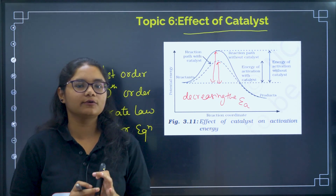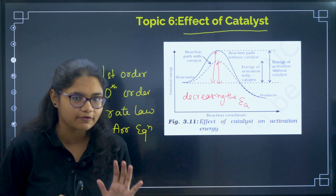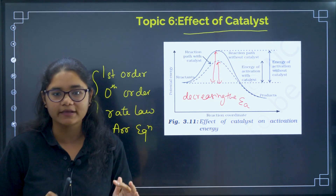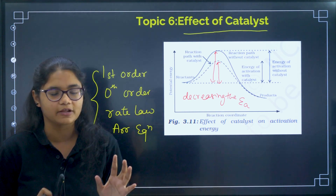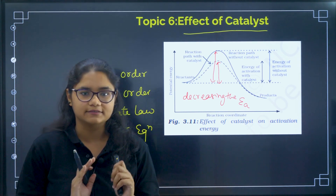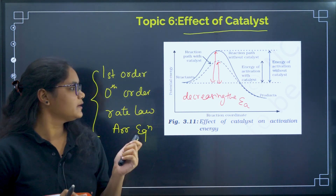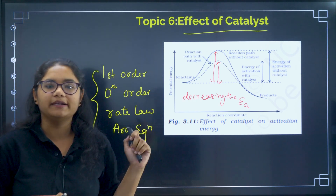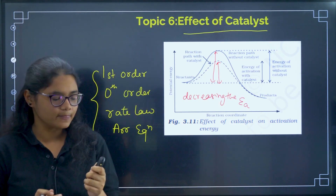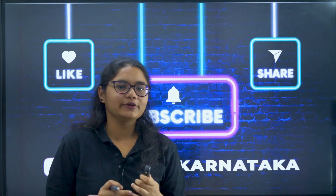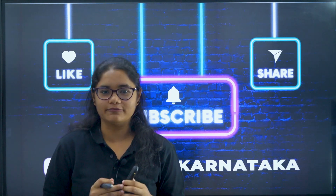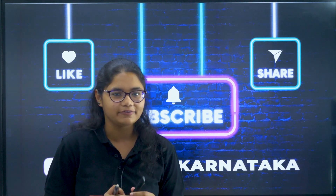To summarize, the most important topics to focus on in this chapter are: first order formula, zeroth order formula, rate law, and the Arrhenius equation. If you master these four topics and know how to apply these formulas, most questions from Chemical Kinetics will be solved. You can download the PDF from the link in the description. If you found this video useful, please like, share, and subscribe. Thank you.